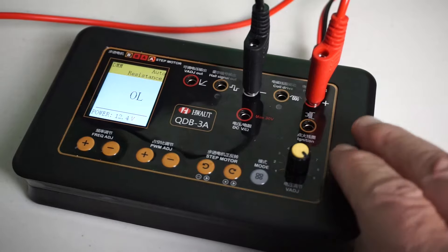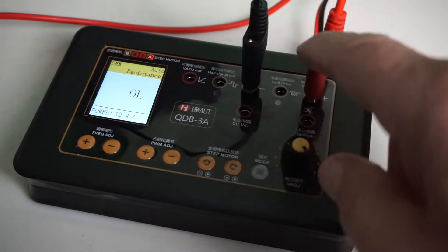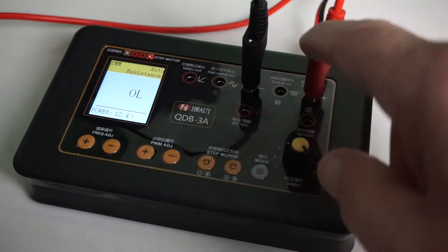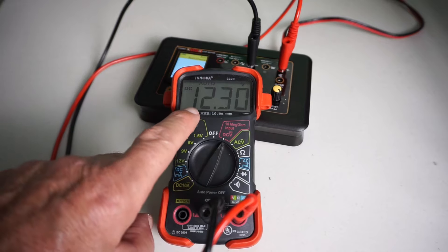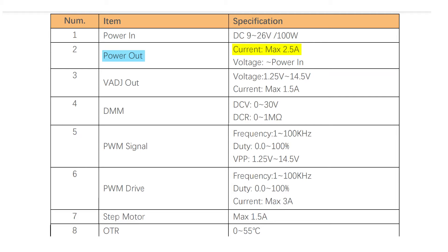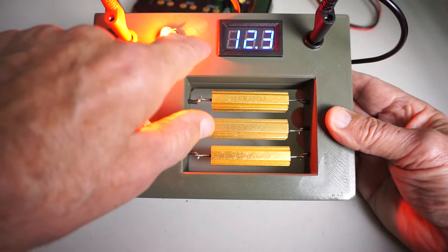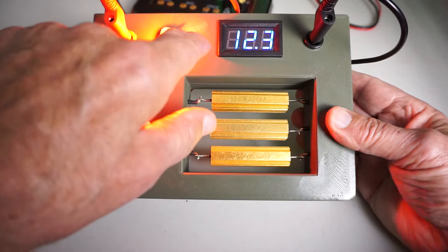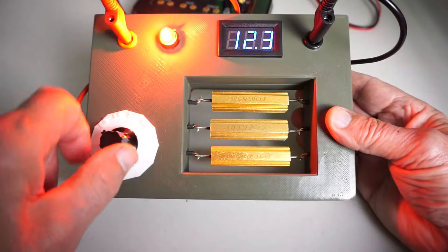So I'm starting with the simple stuff first. These two pins are direct battery voltage output, which is reading as 12.3 volts here. Now the specs state that this is limited at 2.5 amps.